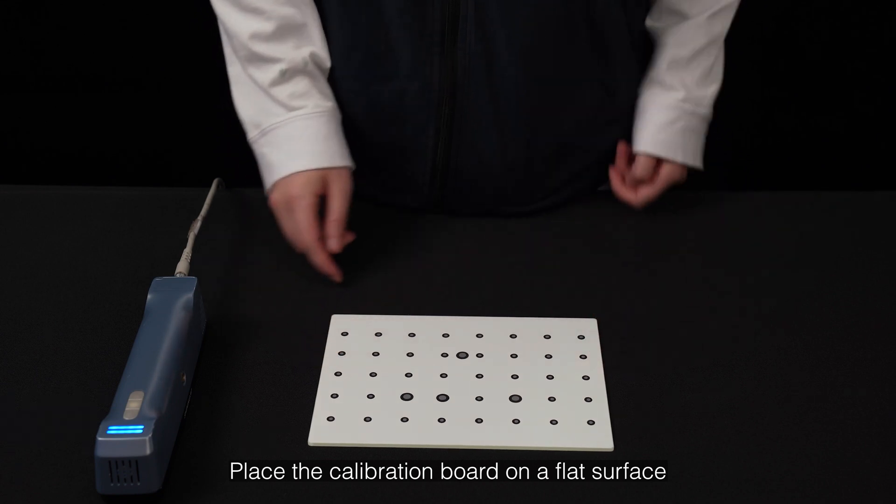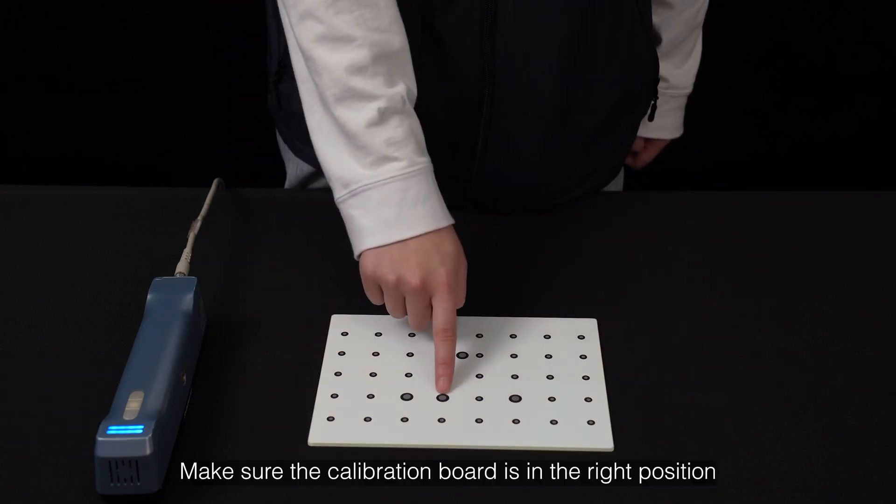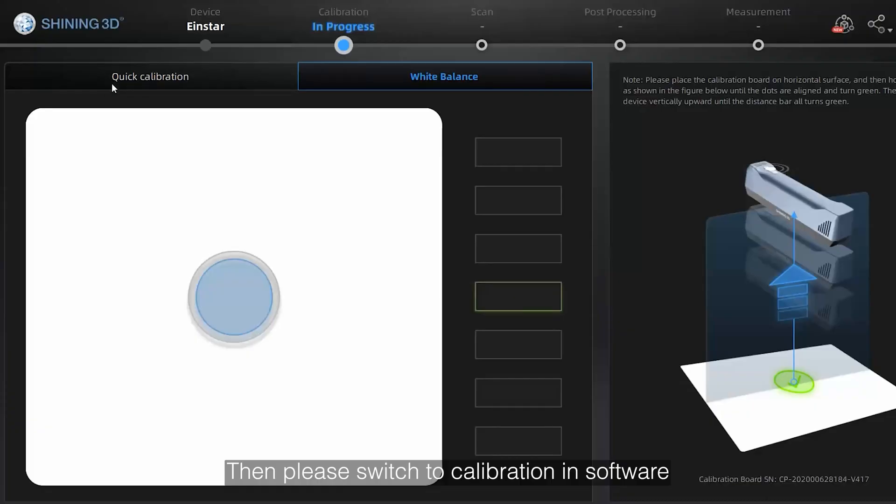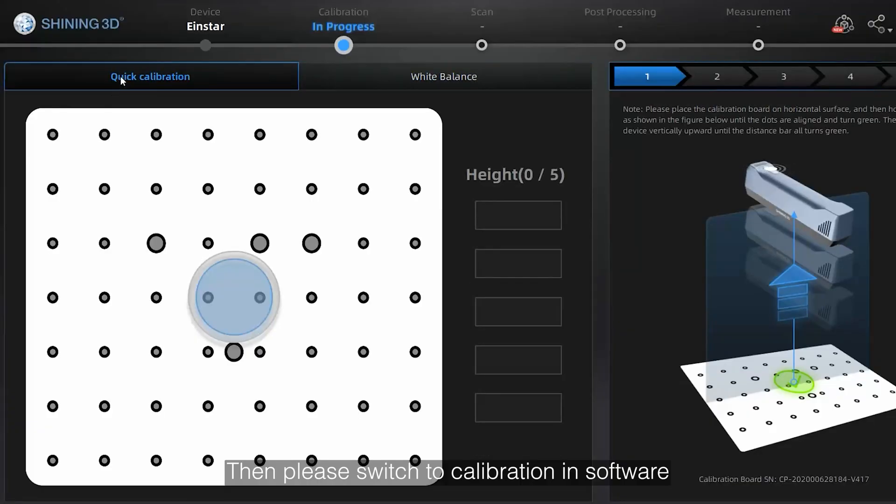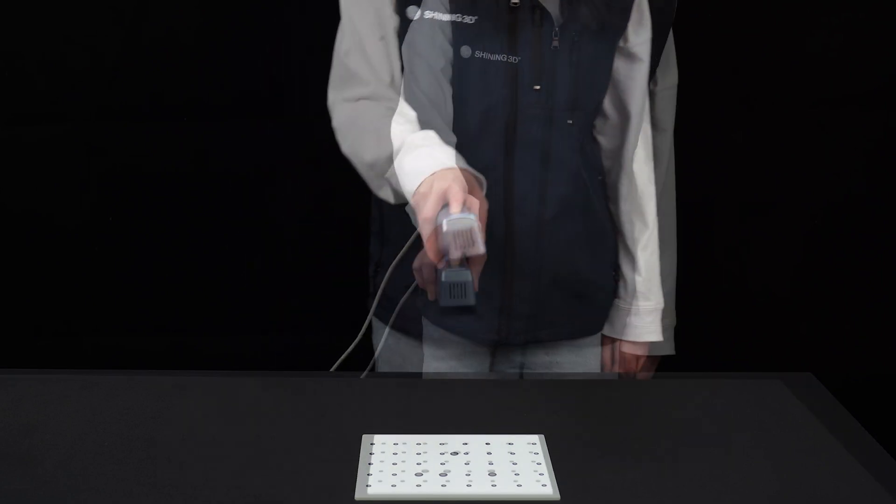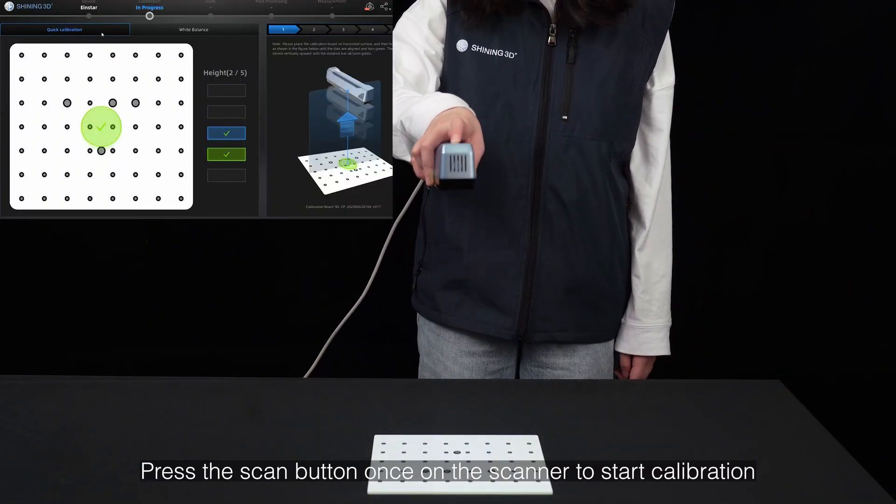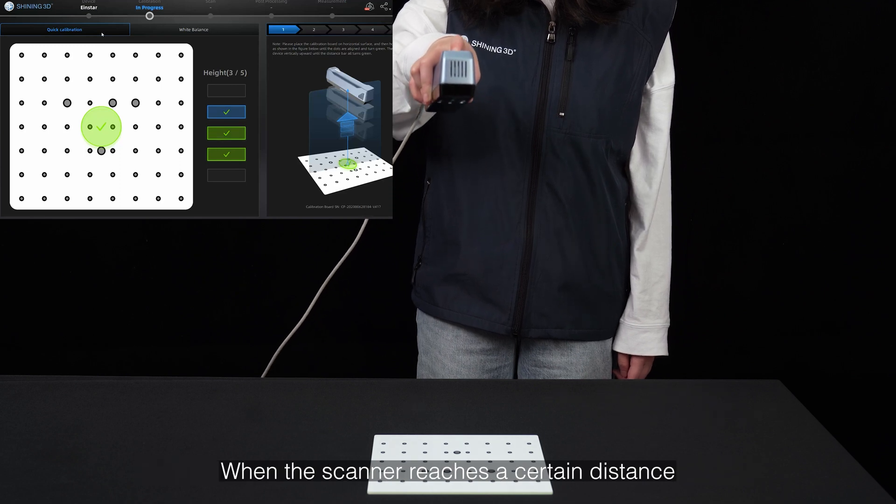Place the calibration board on a flat surface. Make sure the calibration board is in the right position, then switch to calibration in the software. Press the scan button once on the scanner to start calibration. When the scanner reaches a certain distance,